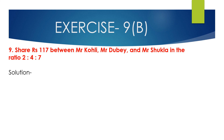We will solve Question 9: Share 117 rupees between Mr. Kohli, Mr. Dubai, and Mr. Sukla in the ratio 2:4:7. The total amount is 117 rupees, and we have to share it among three persons — the first person gets 2 parts, the second gets 4 parts, and the third gets 7 parts. First, find out the total ratio.